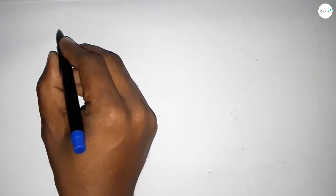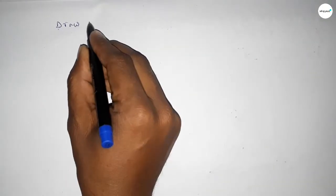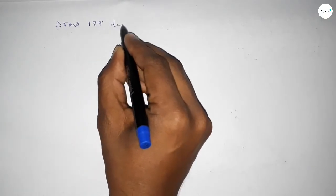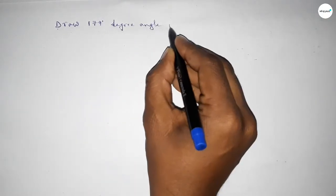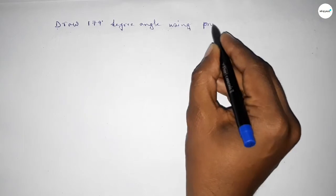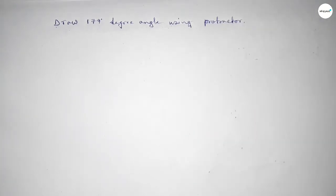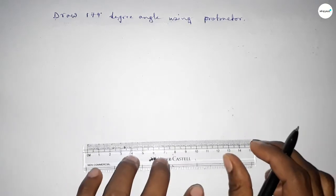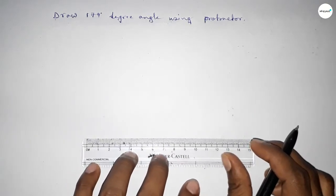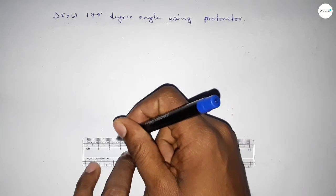Hi everyone, welcome to SSR classes. Today in this video we have to draw a 179 degree angle using a protractor. Let's start the video. First of all, we have to draw a straight line of any length.